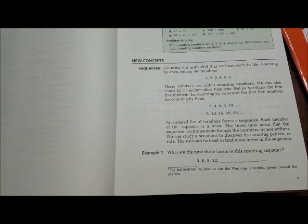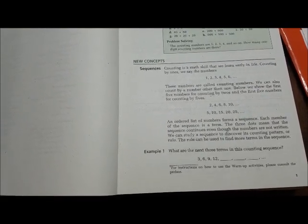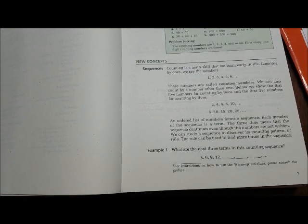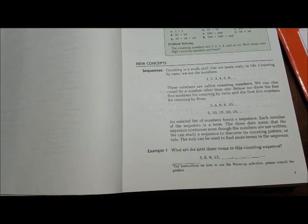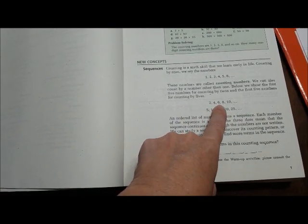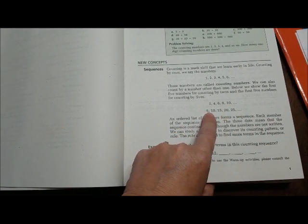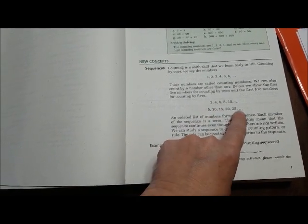We can also count by a number other than one. Below we show you the first five numbers of counting by twos, and the first five numbers of counting by fives. So we have 2, 4, 6, 8, 10, and then we have 5, 10, 15, 20, 25.